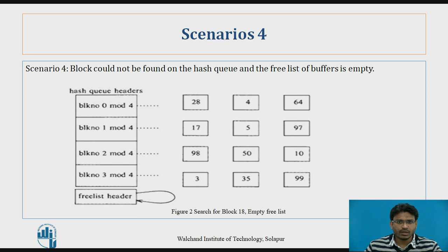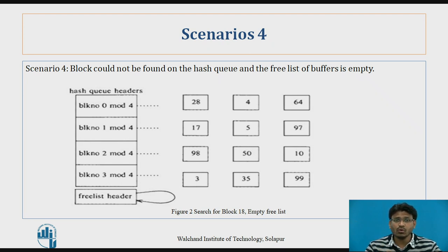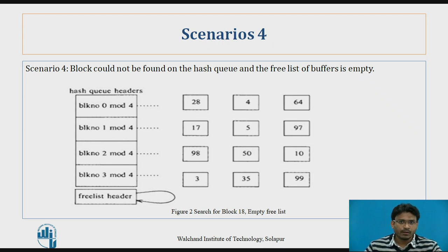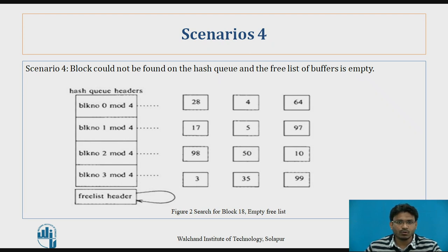In scenario 4, we are searching for block 18. To search for block 18, we execute the hashing function: 18 mod 4 gives 2 as the remainder, so we search for 18 in hash queue bucket number 2. In bucket 2 we have 98, 50, and 10, but we do not have 18. The expected action is to allocate a buffer from the free list, but there is no free list available — this is scenario 4.